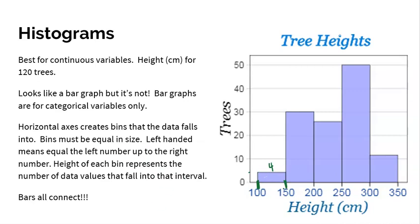The next bin from 150 to 199.999 contained about 30 trees. One drawback of a histogram is that it shows how many trees fall into each interval, but doesn't tell you what those specific values are. Those 30 trees could be heights of 150, 151, 152, 163.7, or 179.42 centimeters — all 30 could even be 175 cm. Histograms aren't meant to give you every detail; they just let you see the distribution, with bins labeled and adjacent to each other.